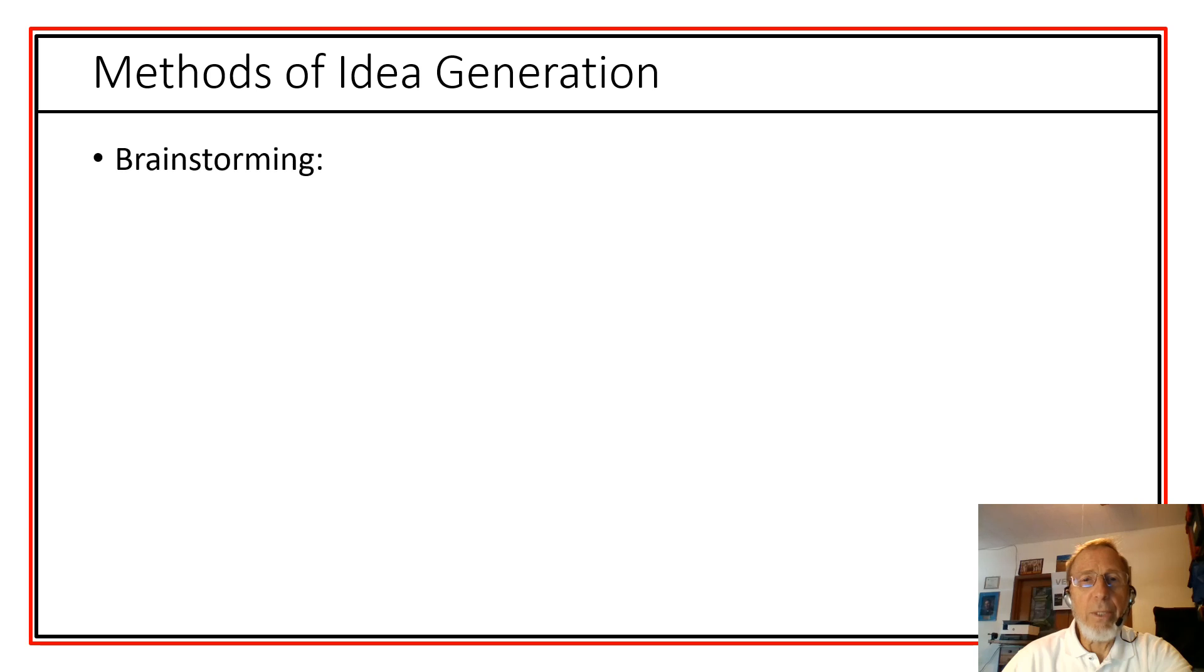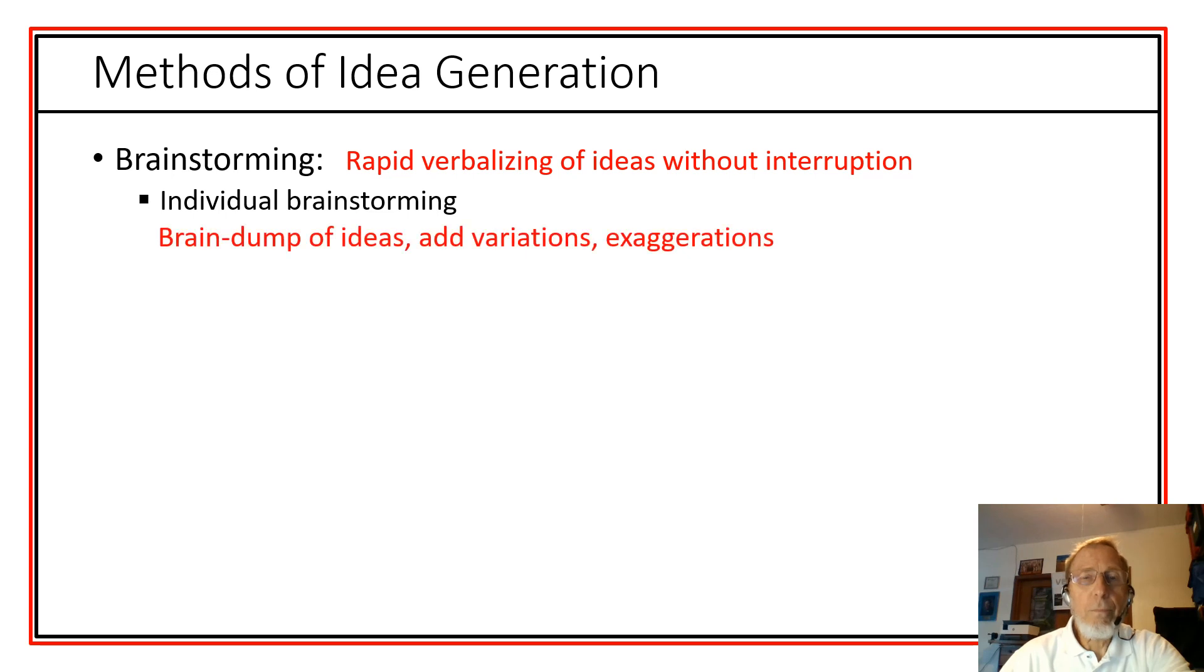Now if we can actually generate some new ideas, a common way that most people are familiar with is what we call brainstorming. So what is brainstorming? Simply a rapid verbalization of ideas without interrupting that. Just shooting off the ideas that we can come up quickly. This can be done by individuals. You just kind of have a brain dump of ideas. Then they begin making variations off these exaggerations in order to come up with more and more ideas. Another way is to do this as a group. Having a group brainstorm. This usually works best when you do it after individuals have done their own brainstorming. And then they come together, share their ideas in some round robin fashion. Then you begin combining and modifying ideas to come up with even more ideas.